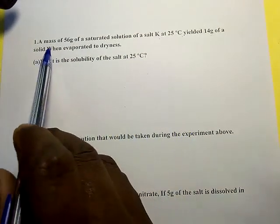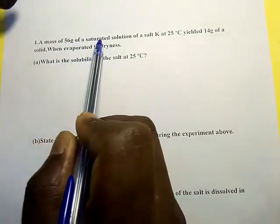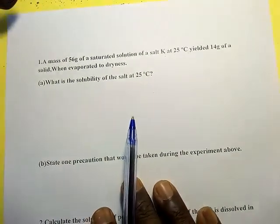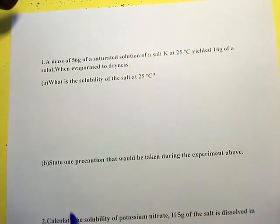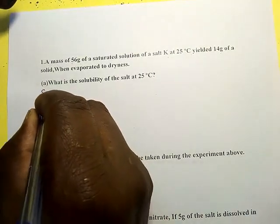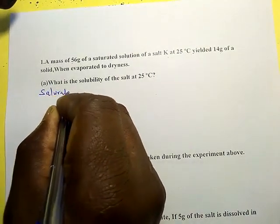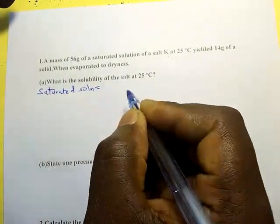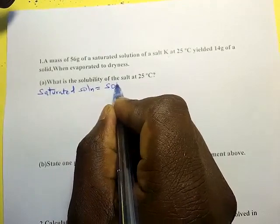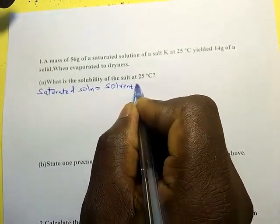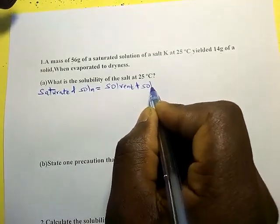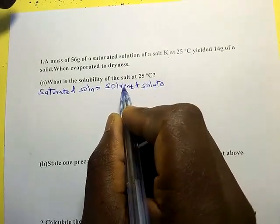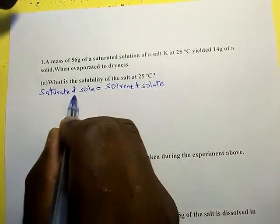We have 56 grams of a saturated solution. What is a saturated solution? Remember, a saturated solution is equal to a solvent plus a solute. There is a certain amount of solute dissolved in a solvent to form a saturated solution.